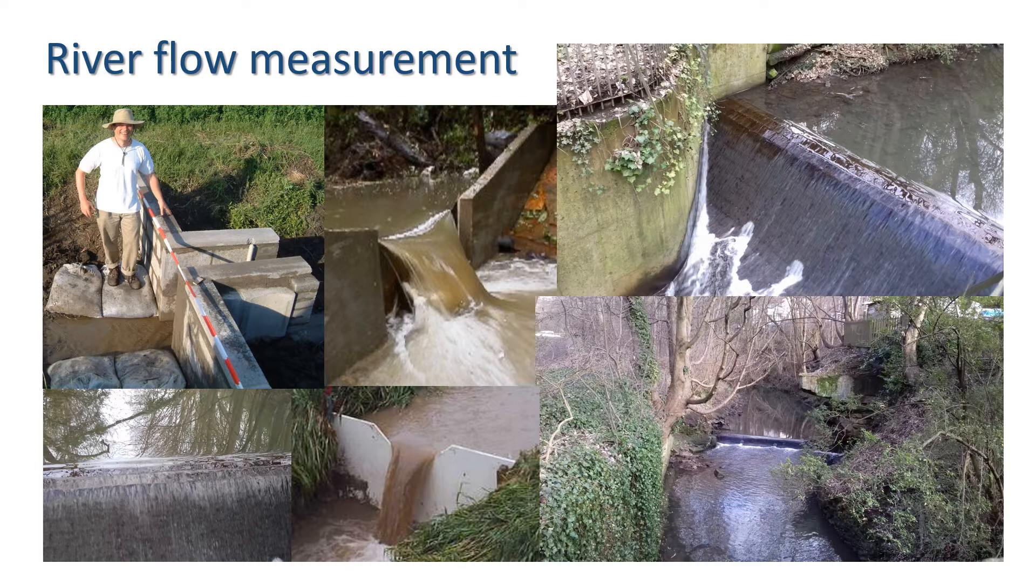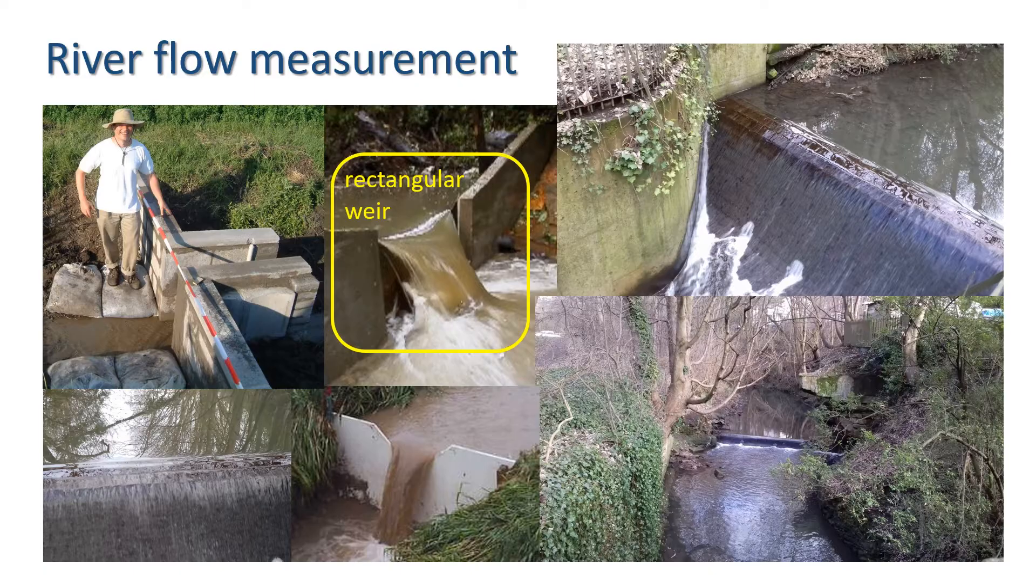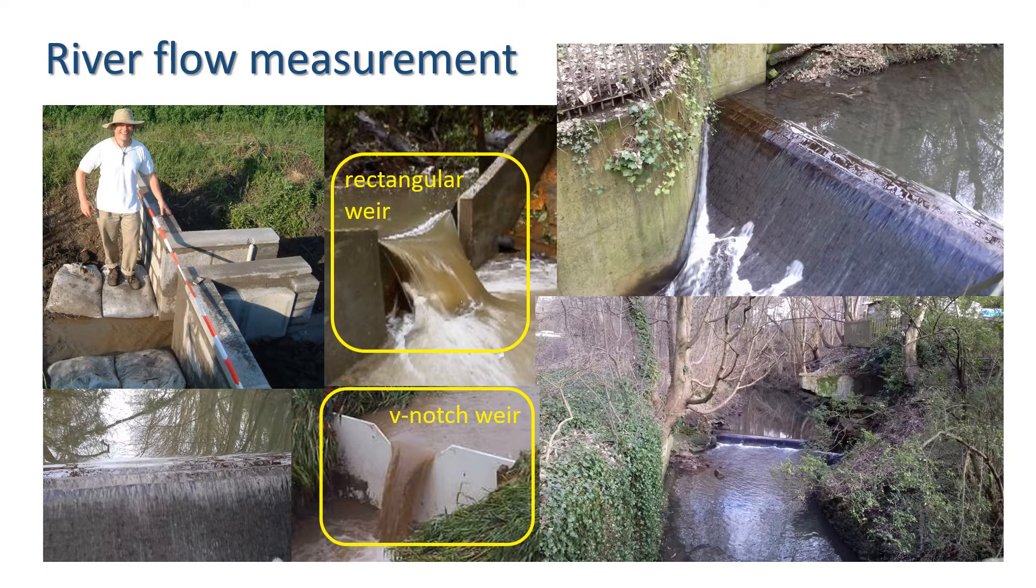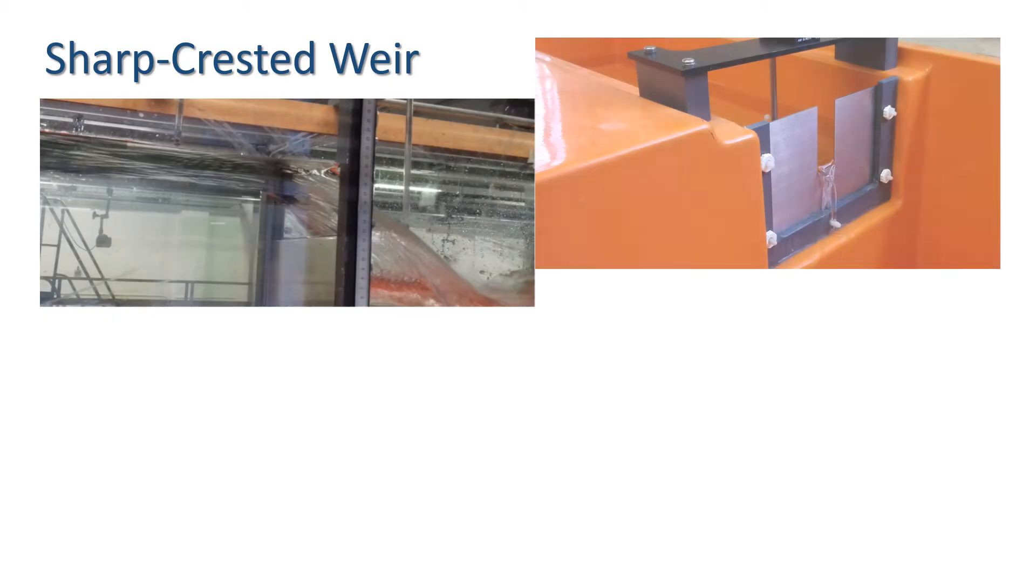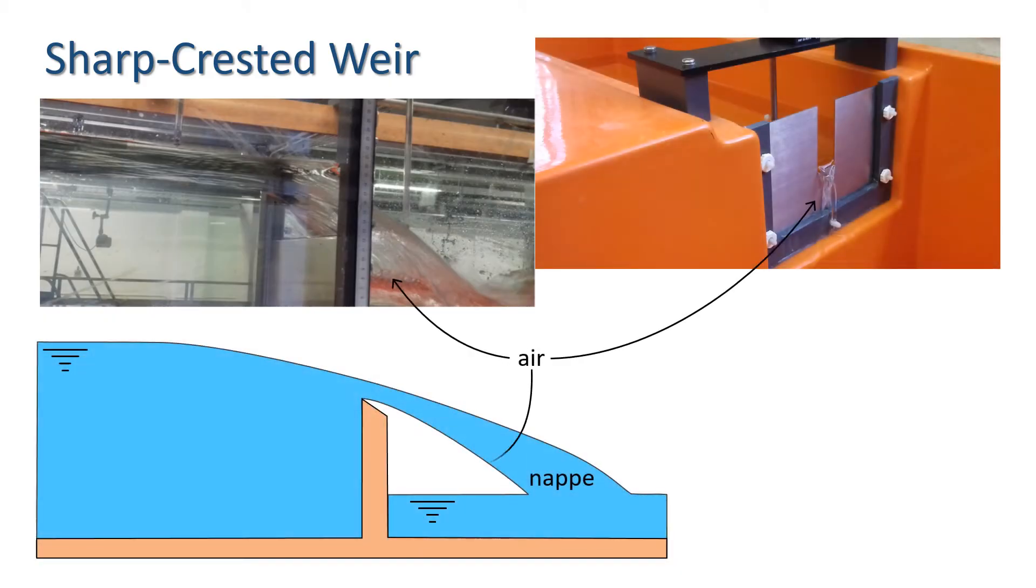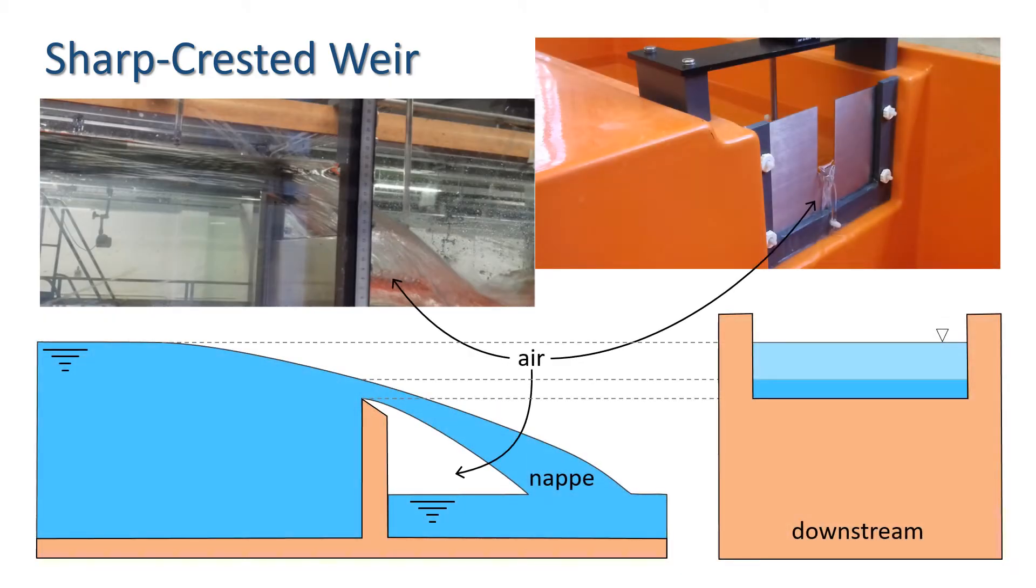Here we're going to look at two such structures, sharp-crested rectangular and v-notch weirs. A sharp-crested weir is a large rectangular notch formed using a smooth vertical plate with beveled edges downstream. Such structures allow water to fall cleanly away from the weir.